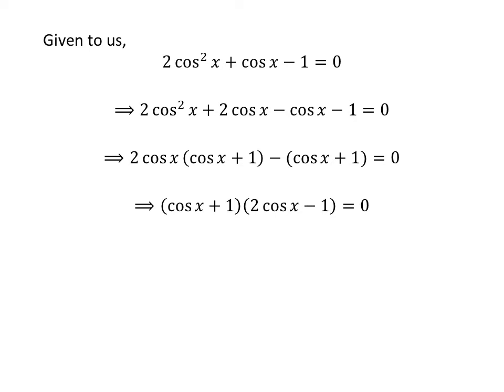Now, let us take out the common factor cosine of x plus 1. We get cosine of x plus 1 times 2 times cosine of x minus 1 is equal to 0.